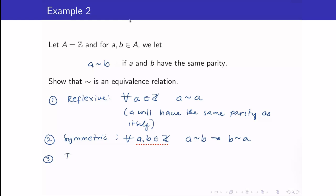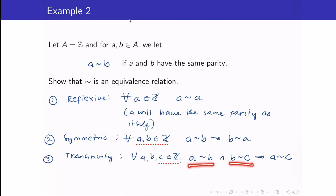And lastly, for transitivity, we need three variables. We check: if A is related to B and B is related to C, then A is related to C. We have three elements in ℤ. The first condition says A and B have the same parity, and the second says B and C have the same parity. Yes, it is true that A and C have the same parity. Therefore, this is really an equivalence relation.